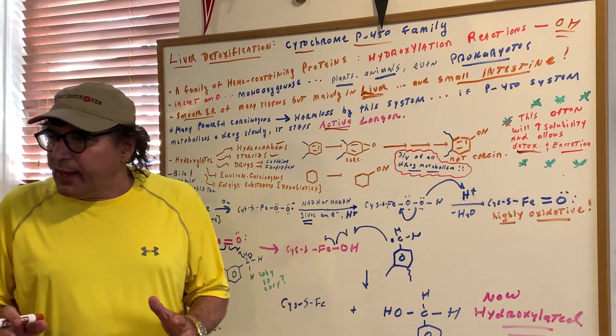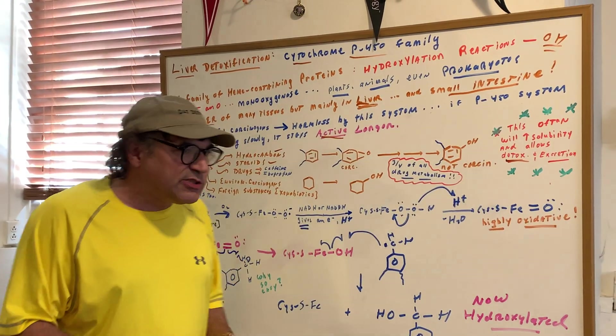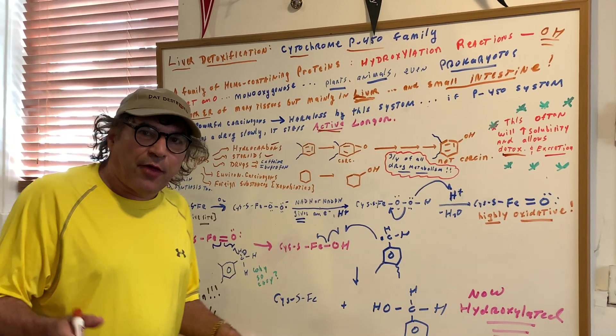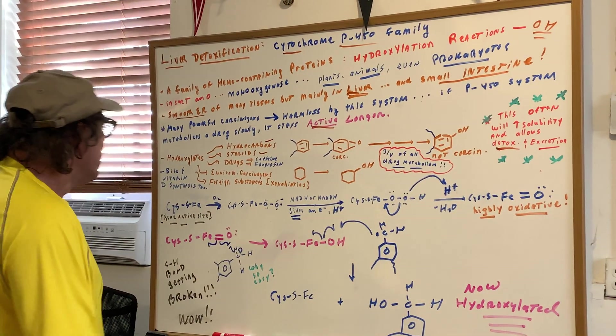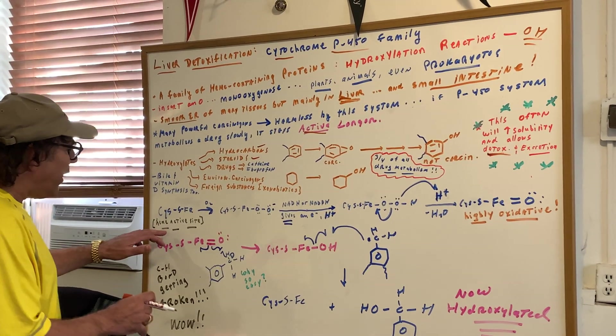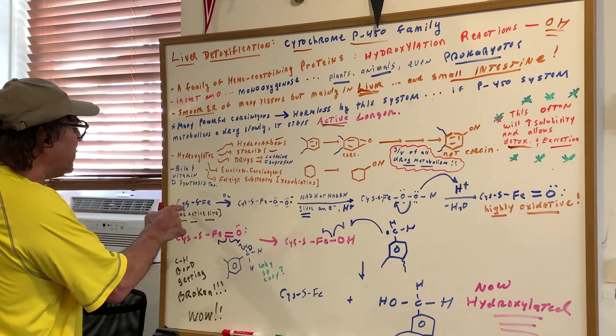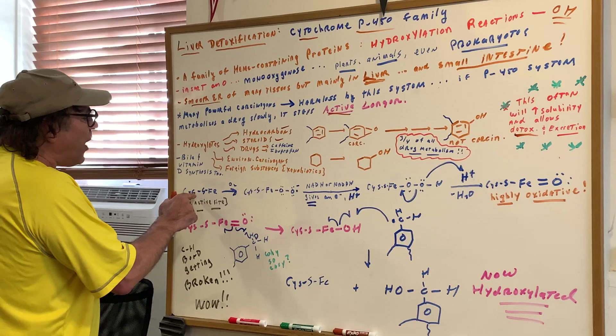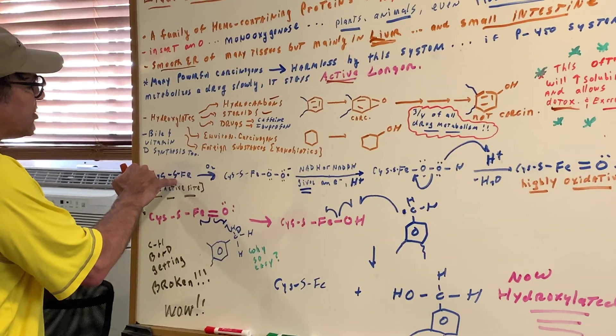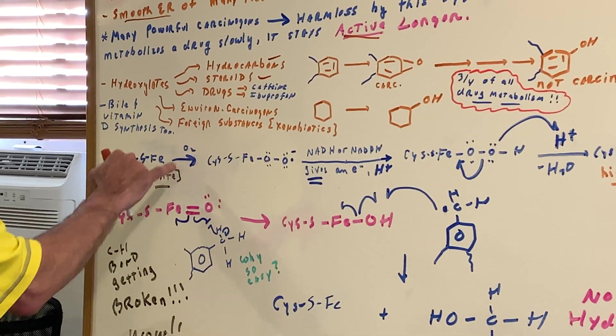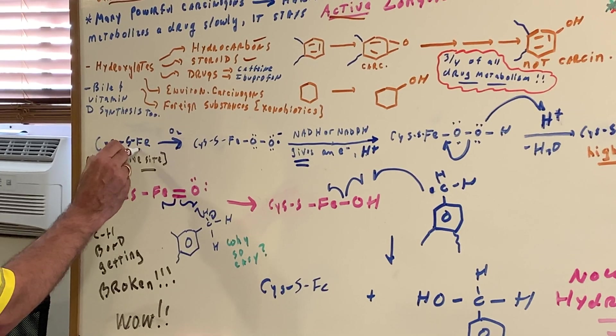Now if you're sitting here wondering, how can this even be possible that we can insert an O? Let me just give you some idea. If you got nothing to do, ask your biology teacher how it happens and let me know how it turns out. If we go into the heme active site and we look at an amino acid, the star player is cysteine. We all know that cysteine has an S, and what's going to happen is it's going to be attached to an iron.